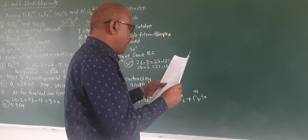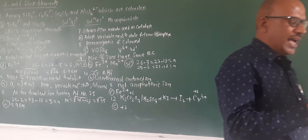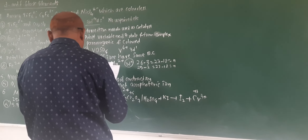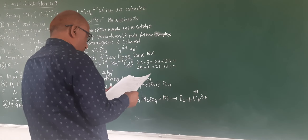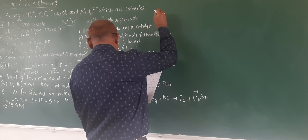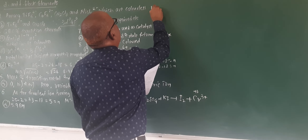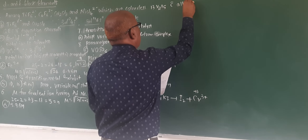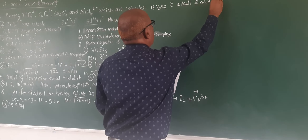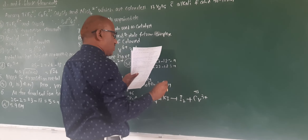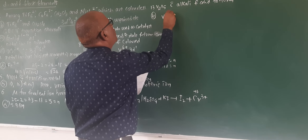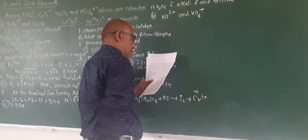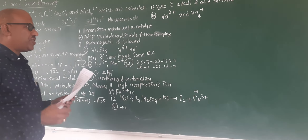Question 13: vanadium pentoxide reacts with alkali as well as acid to give respective ions. The ions formed are VO₂⁺ and VO₄³⁻, obtained by the reaction of vanadium pentoxide with acid and alkali respectively.